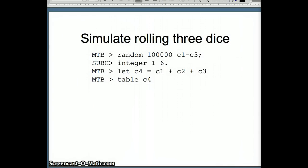If I want to roll three dice, how do we do that? So again, I'm going to go with 100,000 as my number. Random 100,000, we're going to put the numbers in C1 through C3, semicolon to get a subcommand, integer one through six, period, to go ahead and put numbers one through six in columns C1 through C3. Then our goal is to add those together. We want to see what the sum is of those three numbers. So we're going to say let C4 equals C1 plus C2 plus C3.